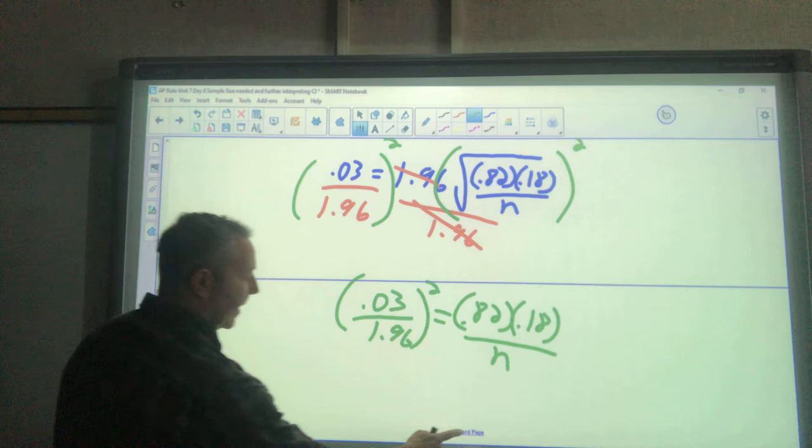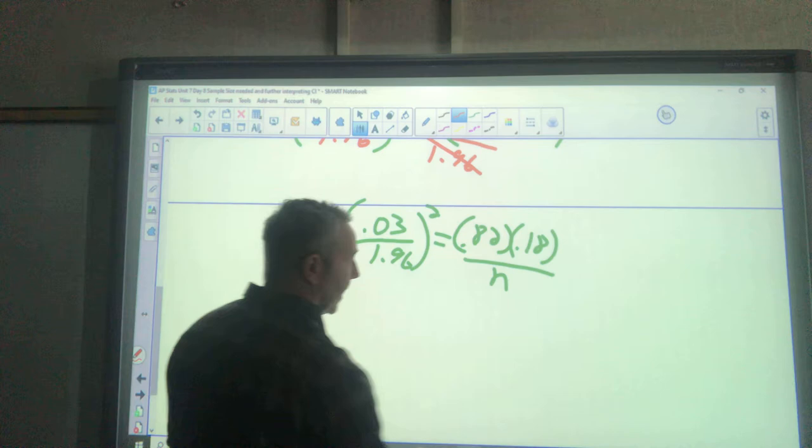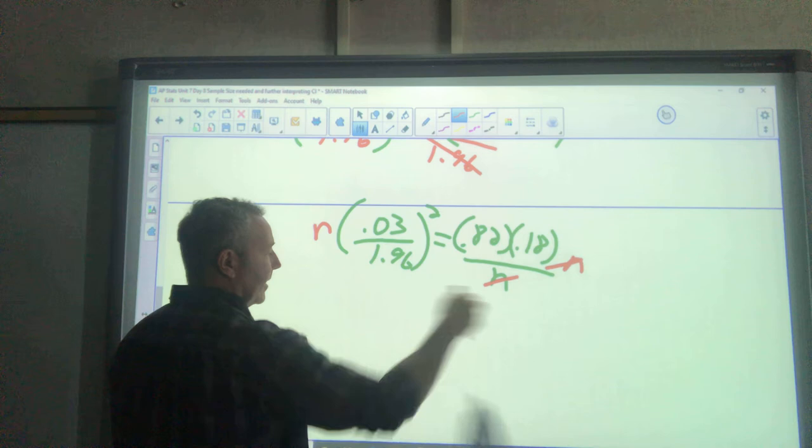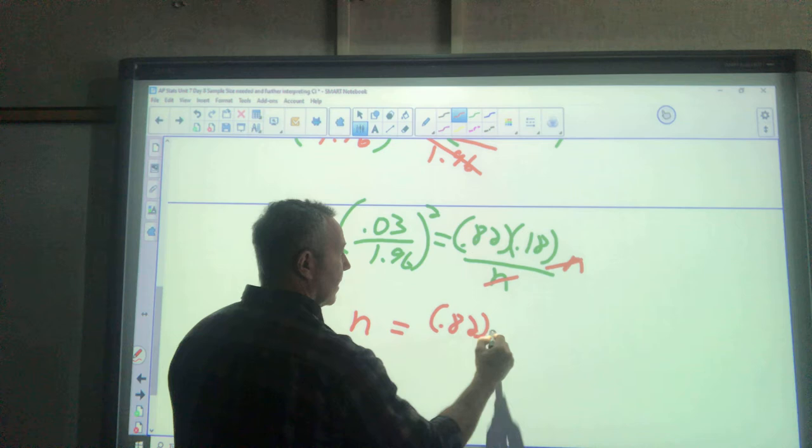My next step, I'm going to multiply by n on both sides and divide by this. So n, my sample size needed, equals 0.82 times 0.18 divided by 0.03 divided by 1.96 squared.